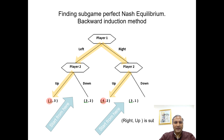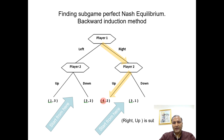Player one now chooses between left, which gives him one, and right, which gives him four. Of course he gets a higher payoff by choosing right. So player one will choose right, ending with a payoff of four for player one and two for player two. The Nash equilibrium of the game is (right, up), and it is called sub-game perfect Nash equilibrium.